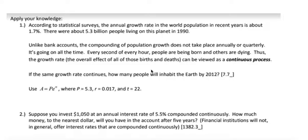Okay, so we're going to apply what we just talked about, our new equation, the PERT equation, Pe to the RT. So let's take a look at these. We have an annual growth rate of the world population is about 1.7%, and there were 5.3 billion people living on the planet in 1990.